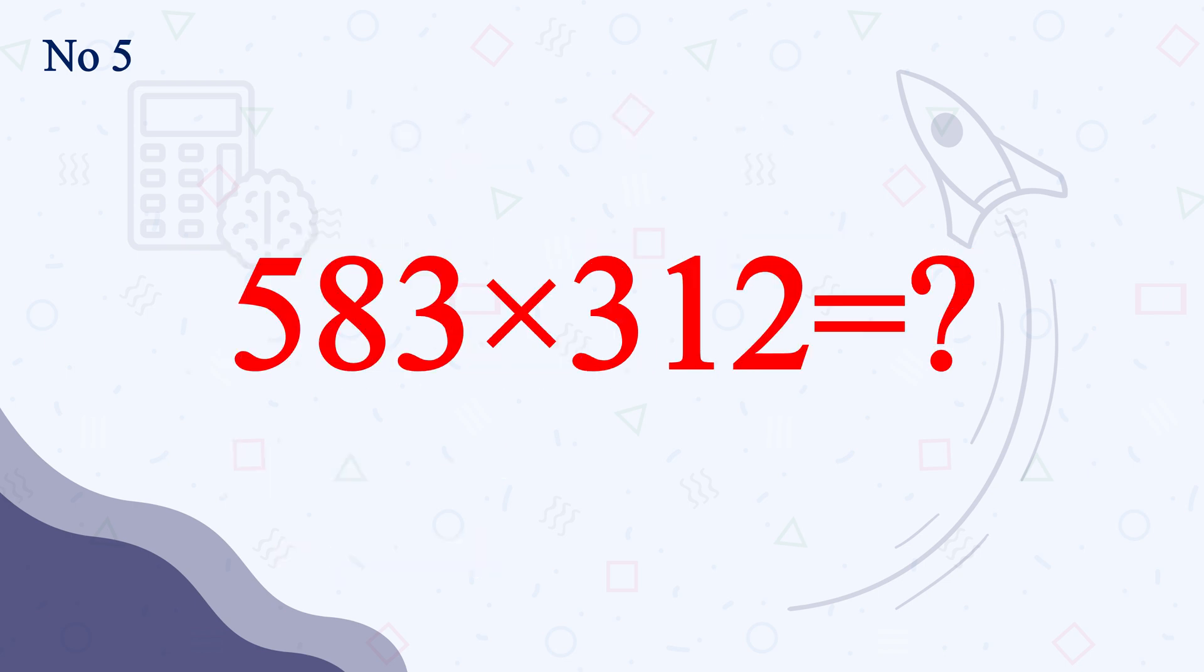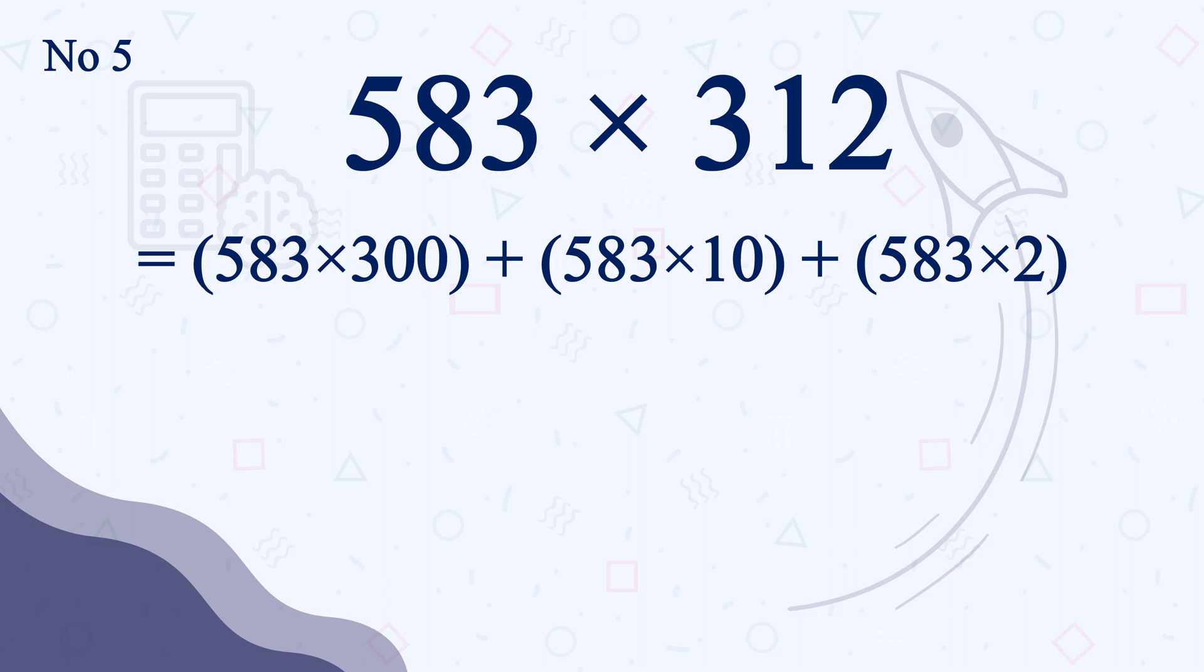Now, the last and the hardest example. Number 5. 583 times 312. The one I asked you at the very beginning of this video. We will break it in this manner. 583 times 300 plus 583 times 10 plus 583 times 2.